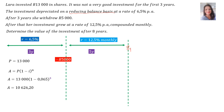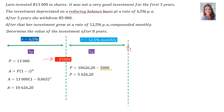Then we will withdraw 5,000 Rand. Therefore, P is the previous answer — 10,626 Rand and 20 cents — minus the 5,000. So P is 5,626 Rand and 20 cents.